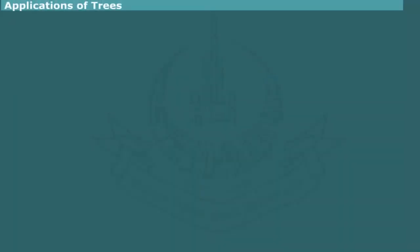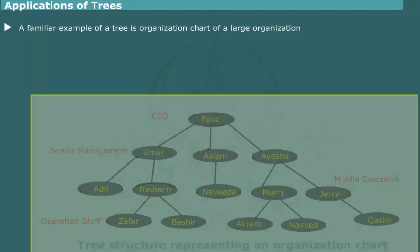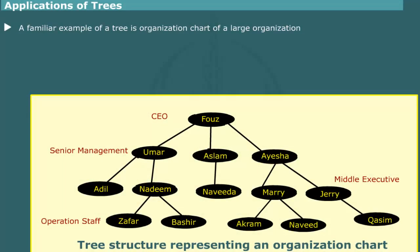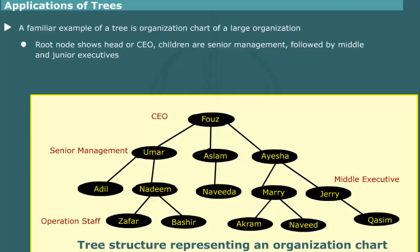Application of Trees. Many hierarchical data structures, analogous to trees, are commonly encountered in our daily life. A familiar example is the organization chart of a large department or company in which the hierarchy of the organization is shown. The root node shows the head or CEO. The children of root are usually the senior management, which are followed by middle or junior executives. The line or operation level staffs are generally exhibited at the leaf nodes. By systematically scanning the trees, from top to bottom, we can list all positions at different levels in the organization.